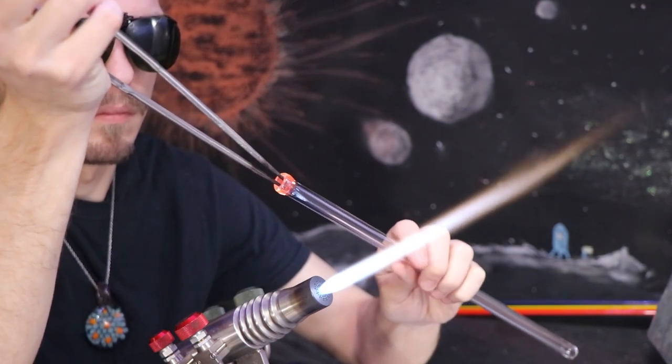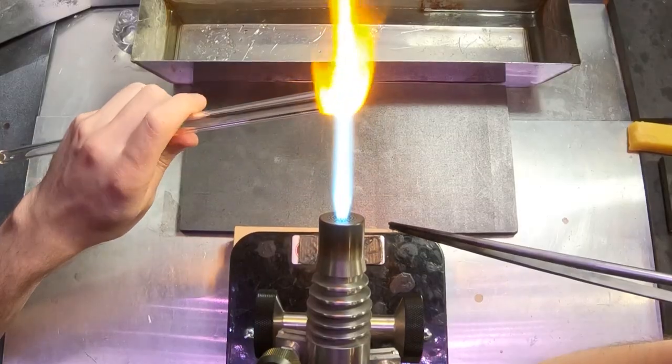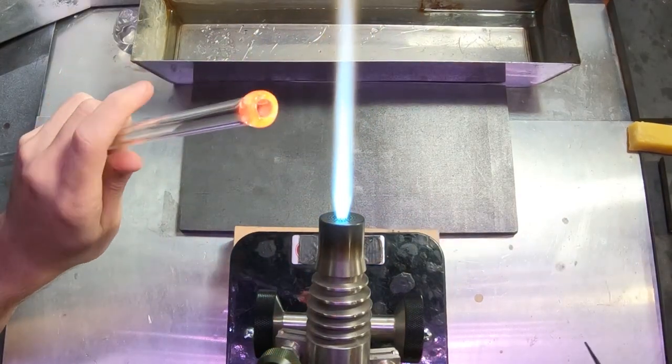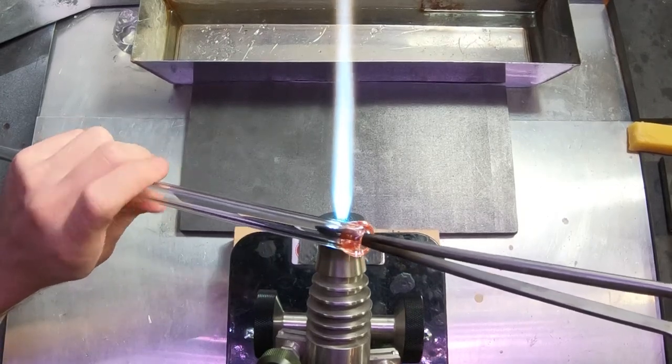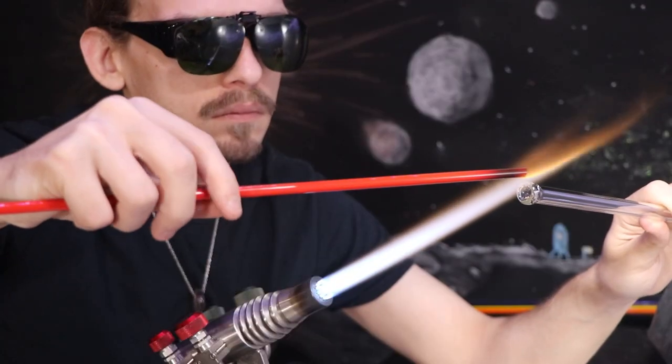I'm starting out by thickening up the end of this blowtube and giving it a slight flare. It's going to take a lot of extra heat to blow out this borosilicate so I don't want to thin out that connection area.